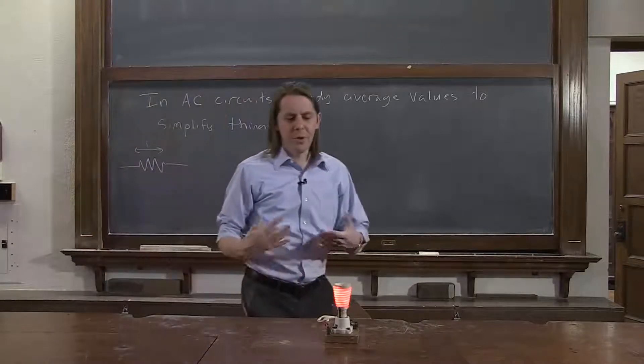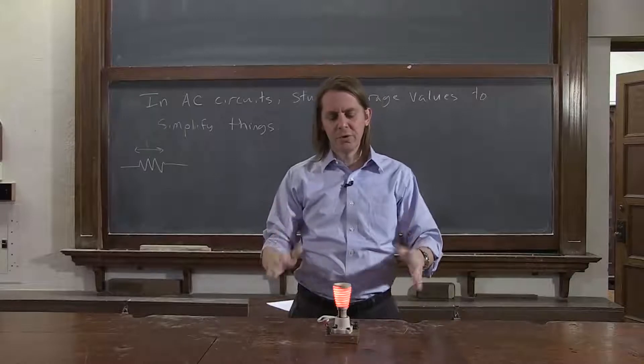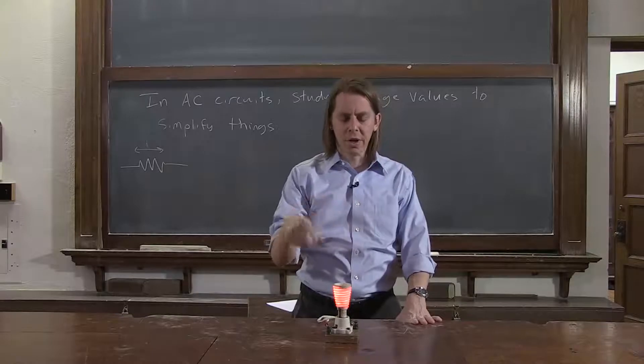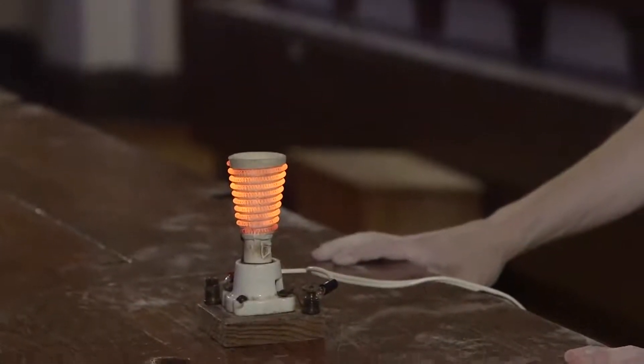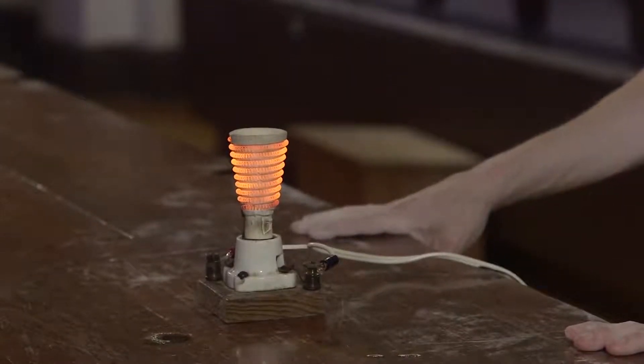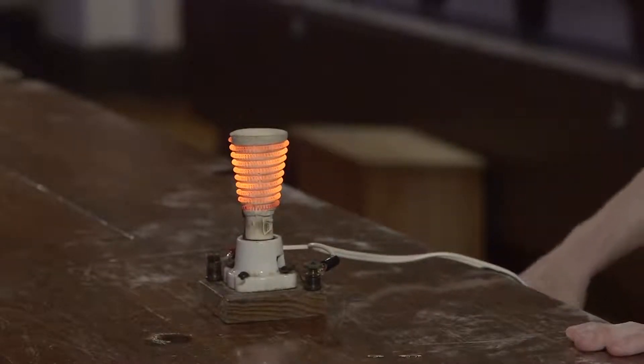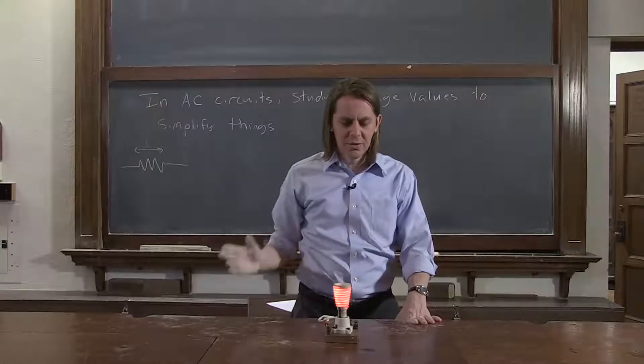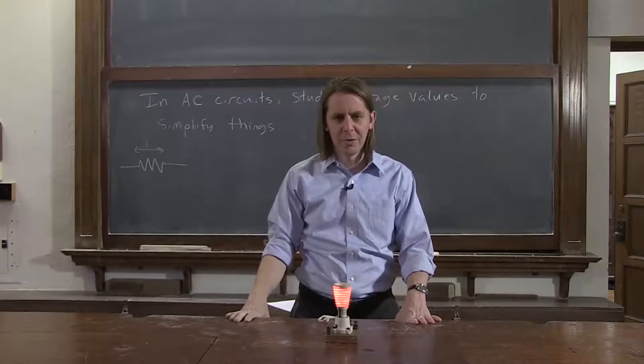When we were thinking about power generation and how resistance depends on temperature, we did some demos with this little heater. It's this nichrome wire all coiled around to have a large resistance around this little ceramic holder. We pretended that it was under DC voltage and DC current, but actually it's plugged into the wall. It's actually under AC. So the current is actually going back and forth at about 60 hertz.